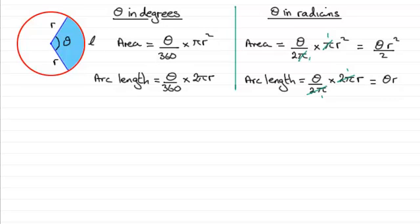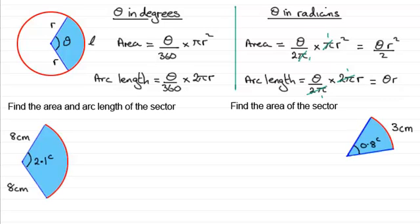Now, I've got a couple of examples which I would encourage you to try. I'll go through the work solution in a moment. But this one, we've got to find the area and the arc length of this particular sector. The angle in here is 2.1 radians. You can see I've illustrated it with a C here rather than writing in the word radians. And for this example, we've got to just find the area of this sector. It's got an arc length of 3 centimetres and the angle subtended here is 0.8 radians. So I'll just give you a moment to pause the video if you'd like to have a go at those two questions.